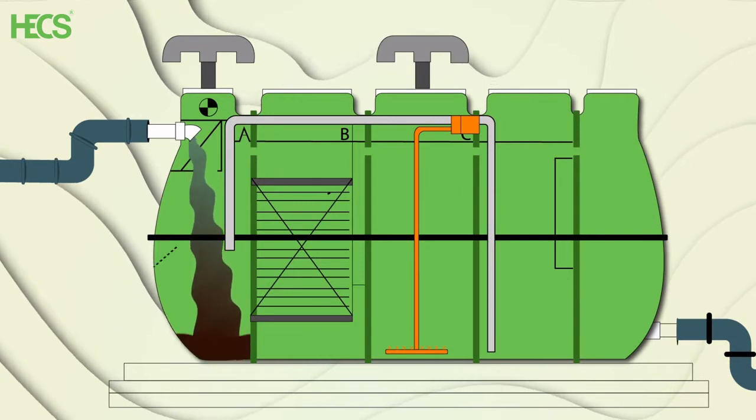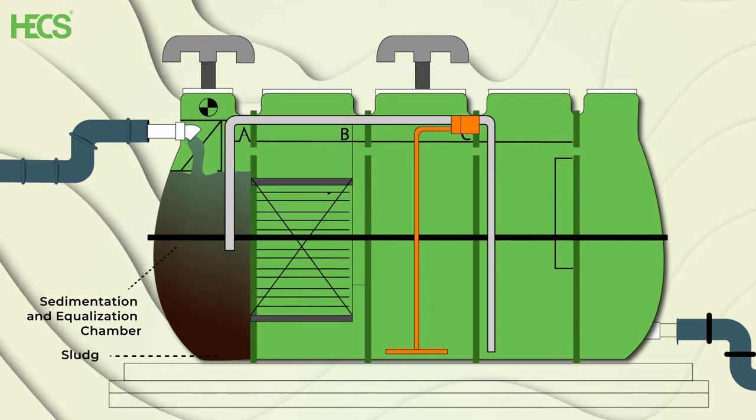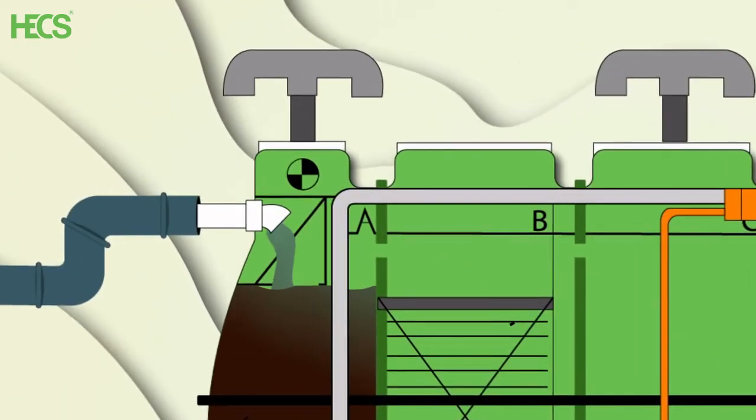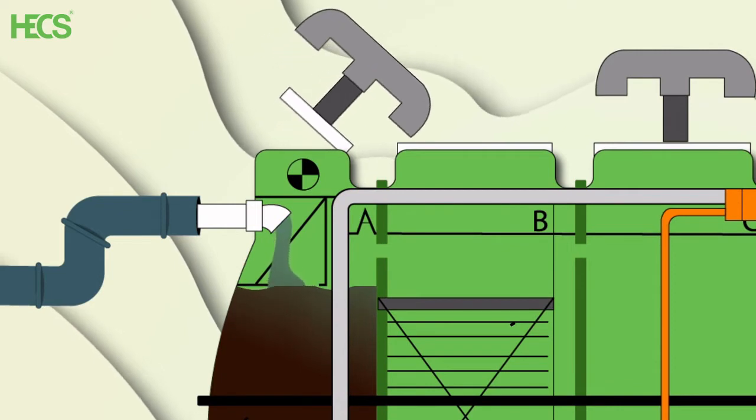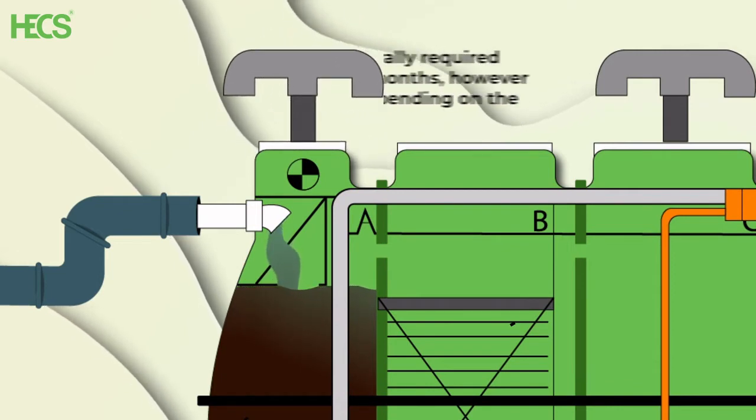The sewage flows through the screening chamber into the sedimentation and equalization chamber. Particles of higher density, that is sludge, will settle down at the bottom of this tank through gravity. This sludge accumulates at the bottom and can be easily desludged through the first manhole. Desludging is generally required once in four to six months.